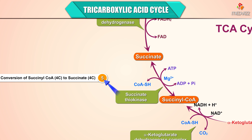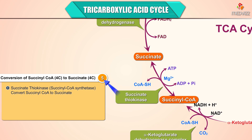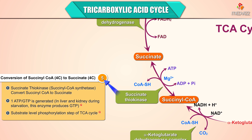Step 5 is the conversion of succinyl coenzyme A to succinate. Succinate thiokinase, also called succinyl coenzyme A synthetase, converts succinyl-CoA to succinate. One ATP or GTP is generated in the liver and kidney during starvation. This is the only substrate-level phosphorylation step of the citric acid cycle, and the enzyme produces GTP.